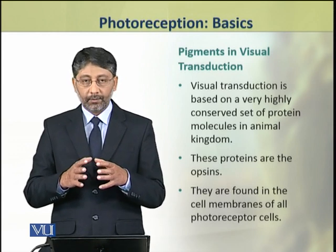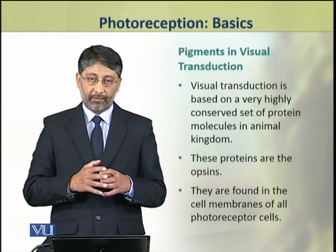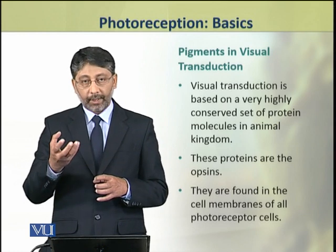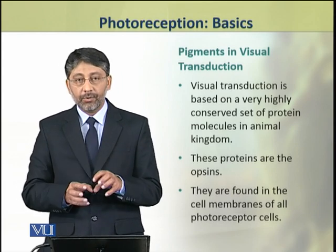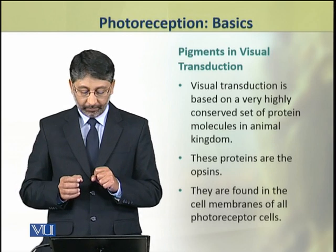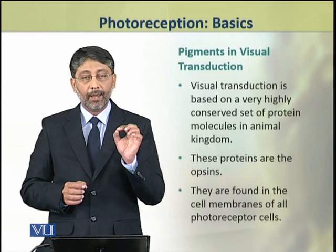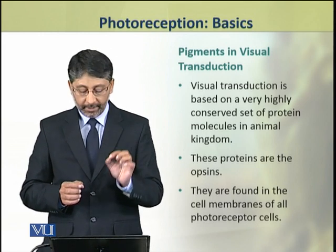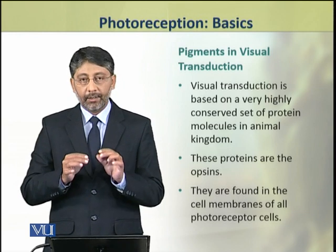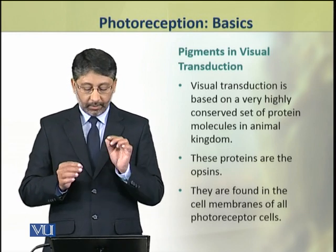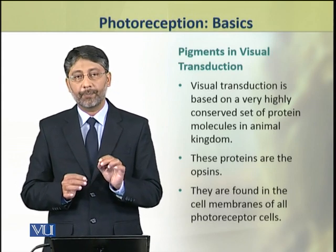The eyes have visual pigments which capture light and transduce it into electrical signals. This visual transduction is based on the presence of a highly conserved set of proteins found throughout the animal kingdom, called opsin proteins. These opsin proteins are found in the cell membranes of all photoreceptor cells.